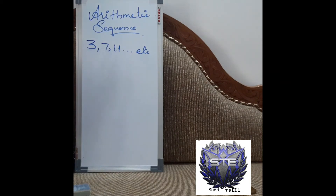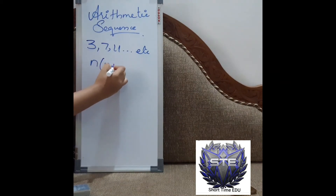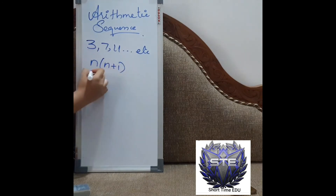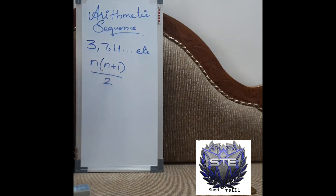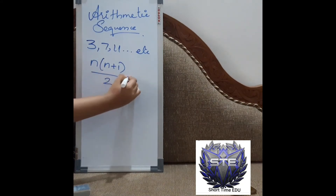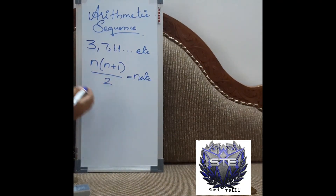For the sum of natural numbers, the formula is n(n+1) divided by 2. For example, the sum of the first 5 natural numbers is 5 into 6 divided by 2. n plus 1 is the next number after n. So 5 into 6 divided by 2 gives us 15, which is the sum of the first 5 natural numbers.